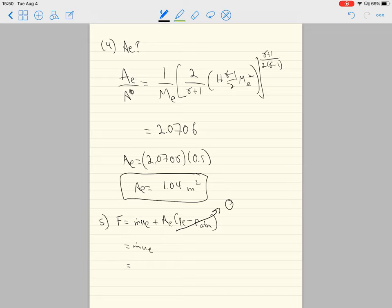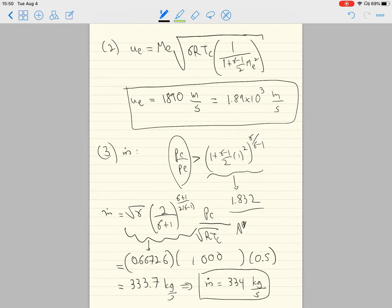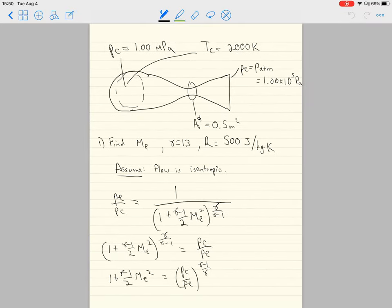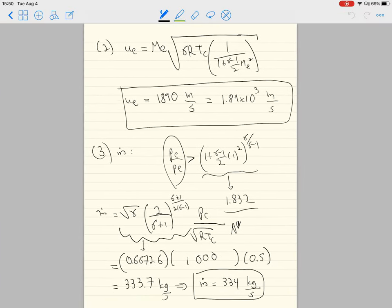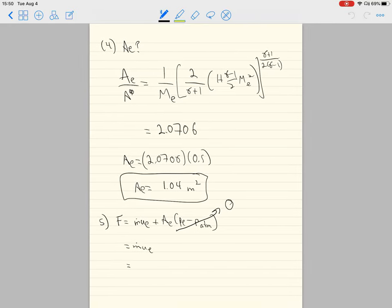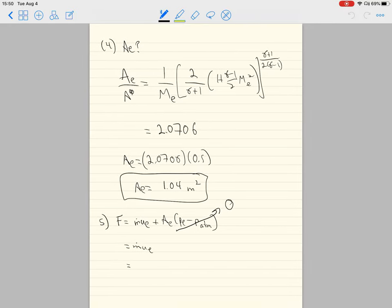We earlier had m_dot was 334 and UE was 1890, so 334 times 1890 is 631 kilonewtons. That's the thrust.